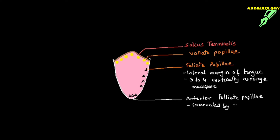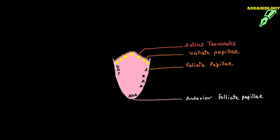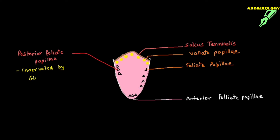Some branches of the facial nerve are connected to the anterior foliate papillae. The back portion has the posterior foliate papillae, which are innervated by the glossopharyngeal nerve — not the facial nerve. This distinction is important to remember.